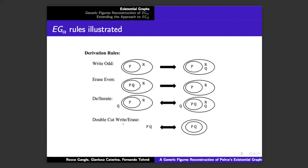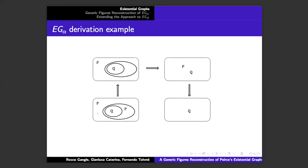If you have two cuts with nothing in between them, you can erase those anywhere on the sheet, and you can also draw them around an arbitrary subgraph. To give a sense of how this works in a logical derivation: the graph on the lower left states P and then negates the conjunction P and not Q. Not P and not Q is equivalent to P implies Q. So we have P and P implies Q. From this we can deiterate the P, then erase the double cut, and then erase the P, and so we derive Q. So from P and P implies Q, we derive Q.